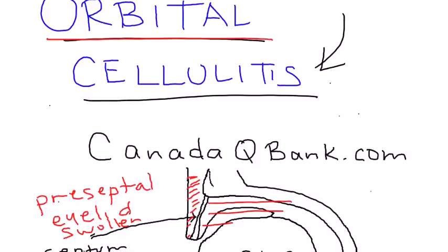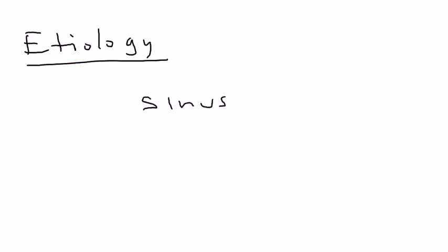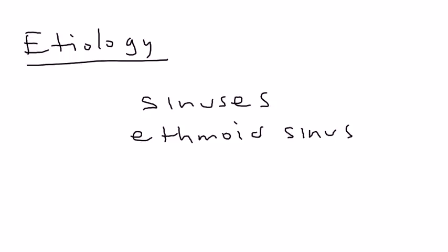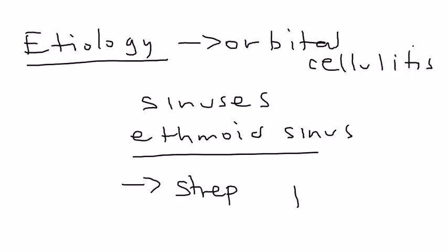Everything after the septum is postseptal, and that septum is really the key here — because if it's postseptal, it's very serious, and that's why it's called orbital cellulitis. What is the cause, the etiology? Well, in close proximity to the eye are the sinuses. The ethmoid sinus in particular is heavily involved, and a pathogen will travel from the ethmoid sinus to the orbital area. The most common pathogen is Streptococcus pneumoniae.